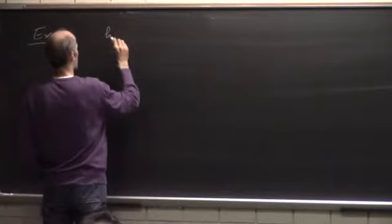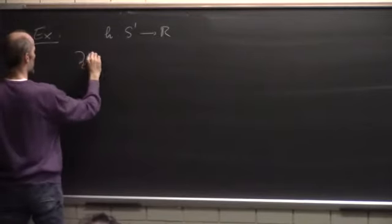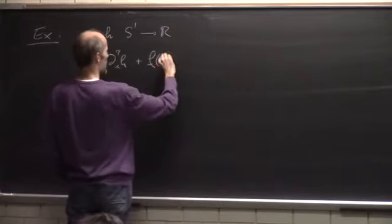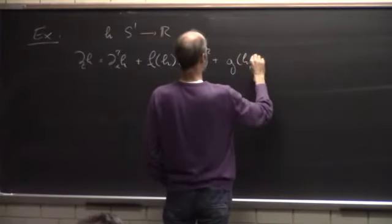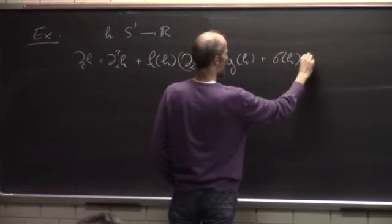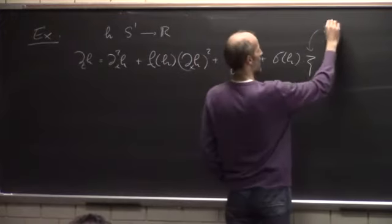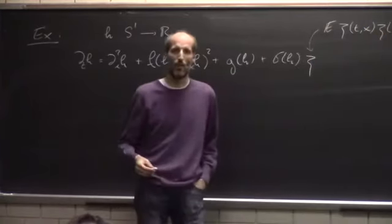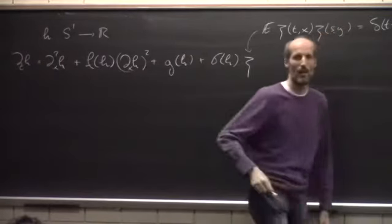I call my unknown H, and H will be a random function from the one-dimensional circle into the reals. I want to solve the following PDE for H. I take a heat equation, then I have a nonlinearity: some function evaluated at H times the derivative of H squared, plus another function evaluated at H, plus some third function evaluated at H times the noise term.